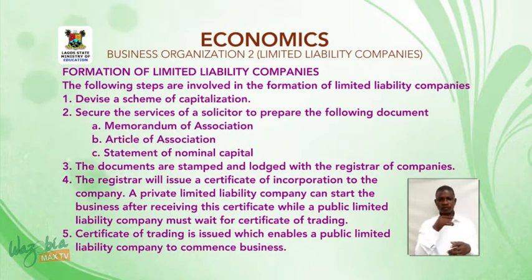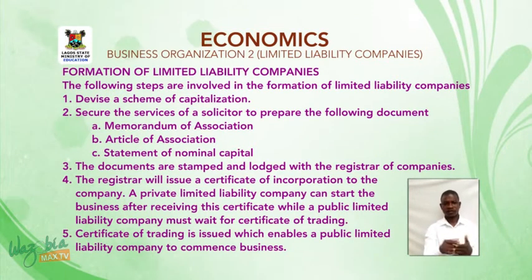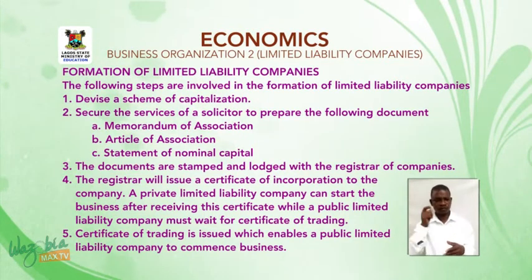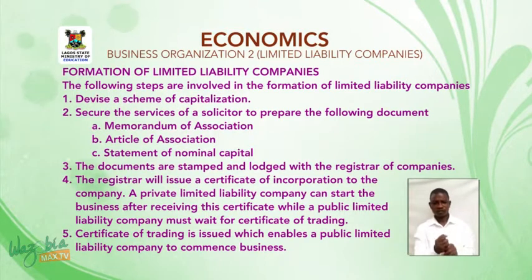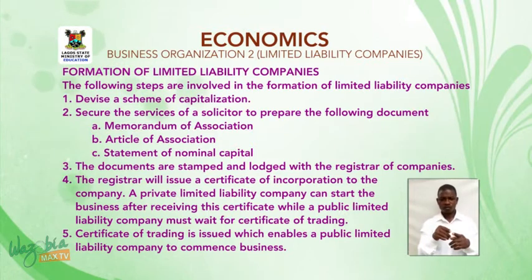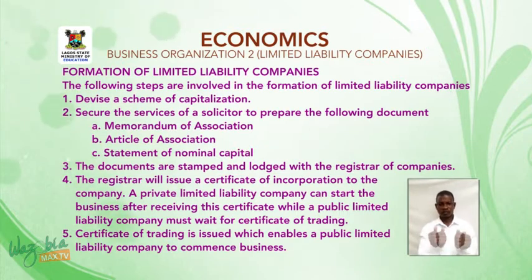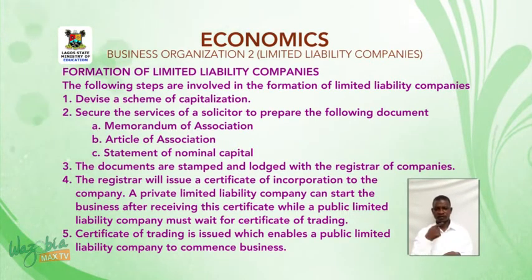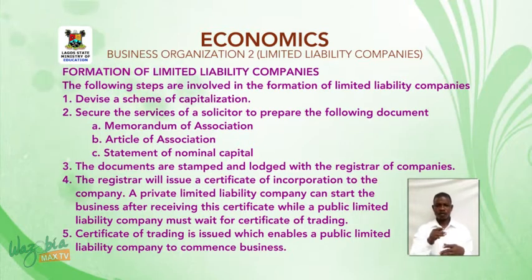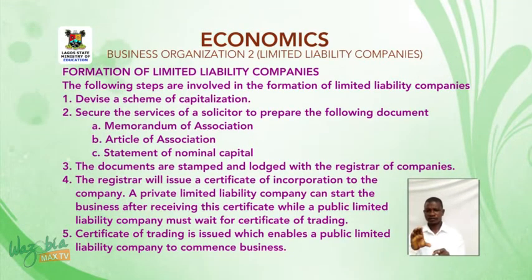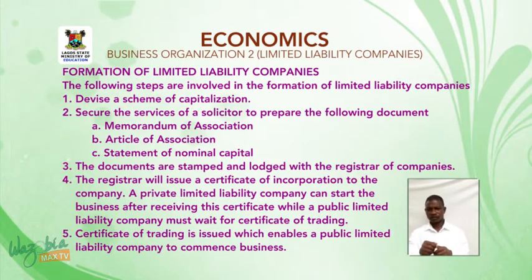3. The documents are stamped and lodged with the registrar of companies. 4. The registrar will issue a certificate of incorporation to the company. A private limited liability company can start the business after receiving this certificate, while a public limited liability company must wait for a certificate of trading. 5. The certificate of trading is issued, which enables a public limited liability company to commence business.